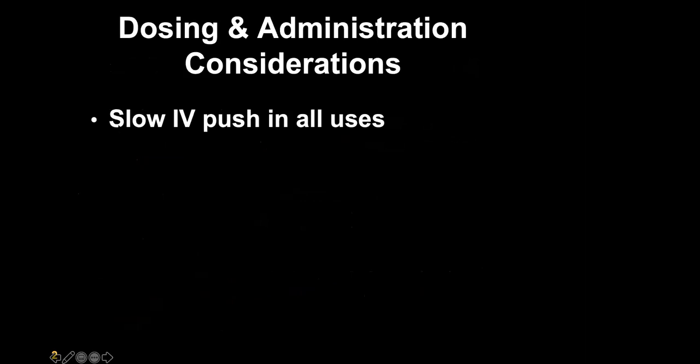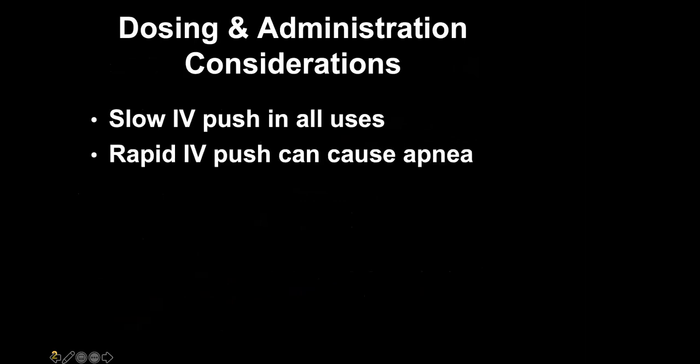I want to stress — and I'll say this several times — slow IV push is the recommended IV administration in all applications. Rapid IV push will produce apnea. If you're using ketamine for RSI, apnea will occur in moments anyway from the succinylcholine or vecuronium. But if you're using it for a painful extrication or movement of a fracture patient or management of agitated delirium when you have an IV — you clearly don't want apnea to occur. So slow IV push is critical.